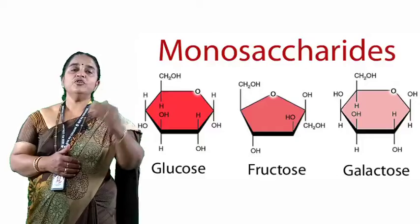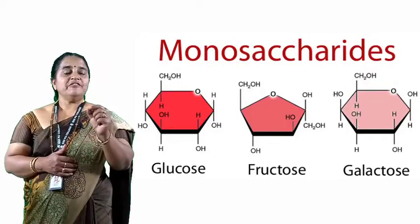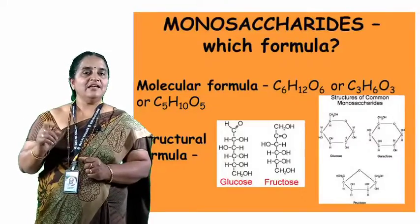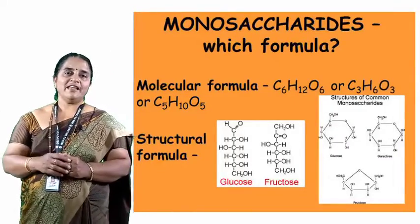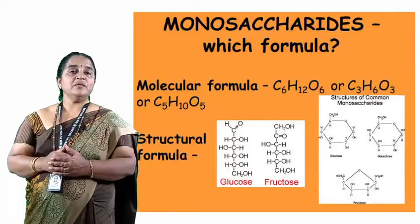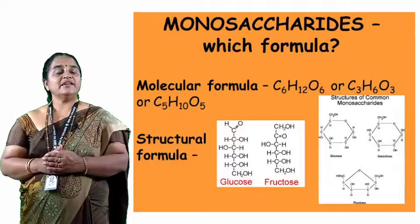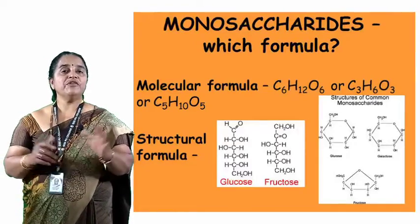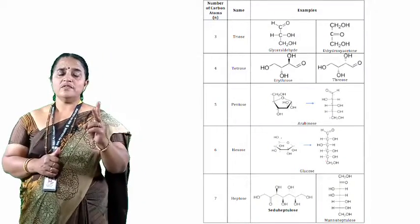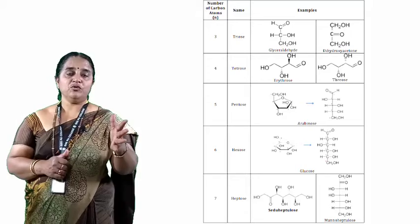Monosaccharides are specified with a general formula CnH2On. Depending upon the number of carbon atoms in a molecule, we classify monosaccharides or simple sugars into five groups: triose, tetrose, pentose, hexose, and heptose.